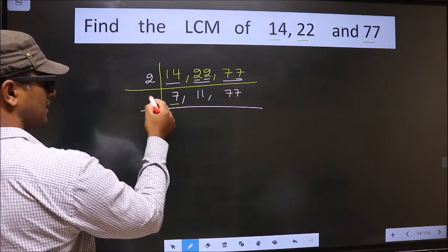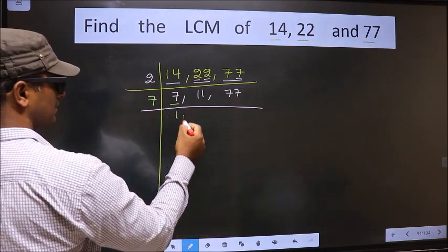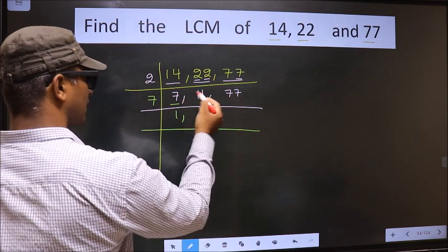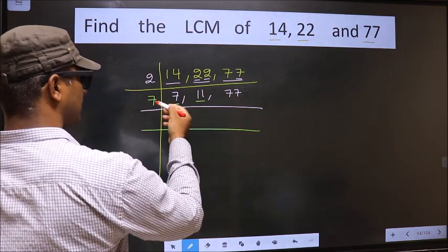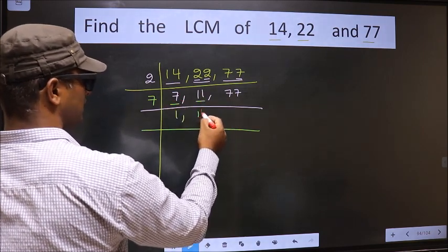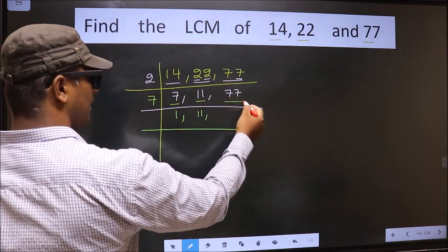Now, here we have 7. 7 is a prime number. So, 7 times 1 is 7. The other number 11 is not divisible by 7. So, we write it down as it is.